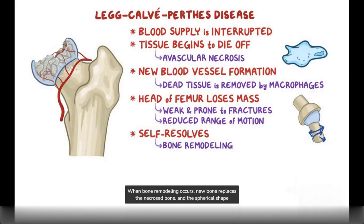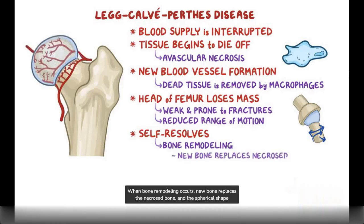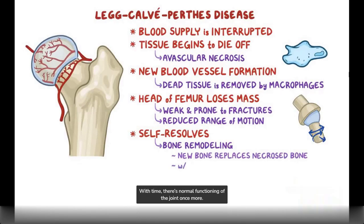When bone remodeling occurs, new bone replaces the necrosed bone, and the spherical shape of the head of the femur gets restored and properly fits in the acetabulum again. With time, there is normal functioning of the joint once more.